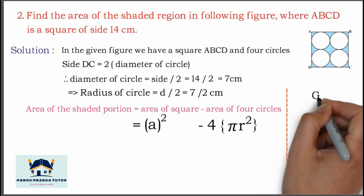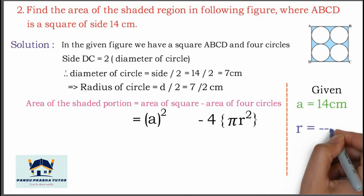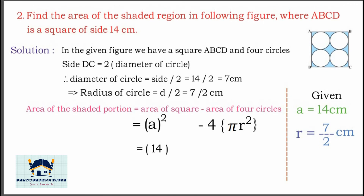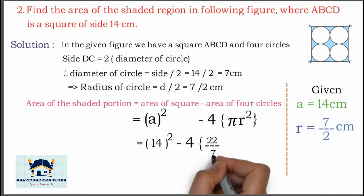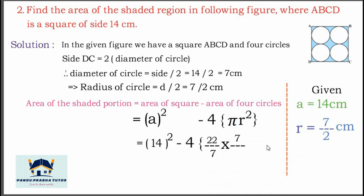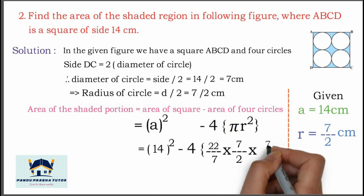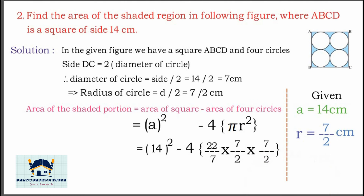Now we will substitute the given values. A is equal to 14 cm, r is equal to 7 by 2 cm. Which is equal to 14 squared minus 4 into 22 divided by 7 into (7/2) squared, written as 7/2 into 7/2.